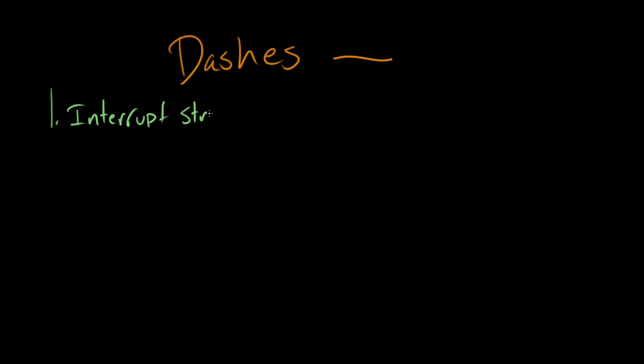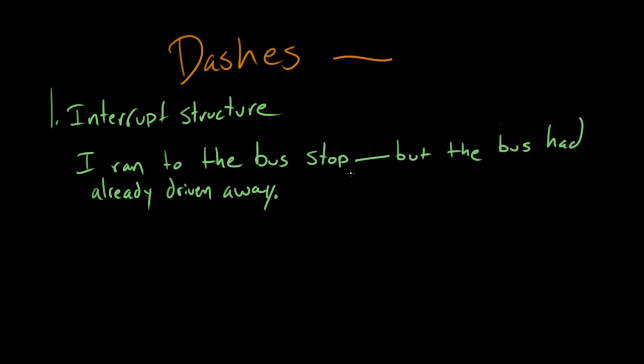Use number one is that they can mark interruptions in the structure of a sentence. As in, I ran to the bus stop—but the bus had already driven away. So we're using this dash to interrupt the structure of this sentence. Okay, but couldn't you just put a comma there? You know, you totally could. You absolutely could use a comma instead of a dash. But the dash has this feeling, and I'm gonna make up a word here, it feels more interrupt-y.